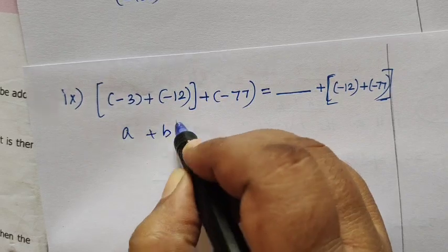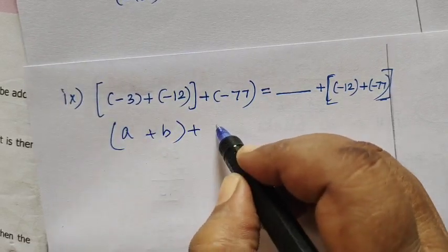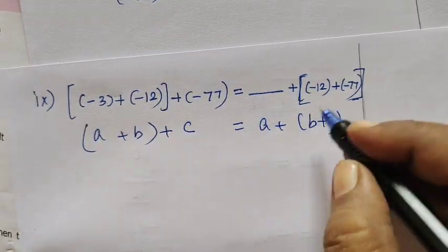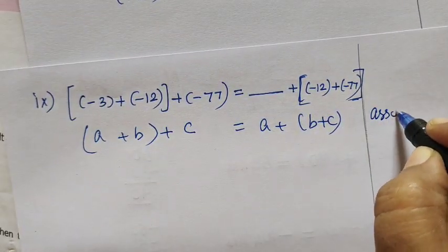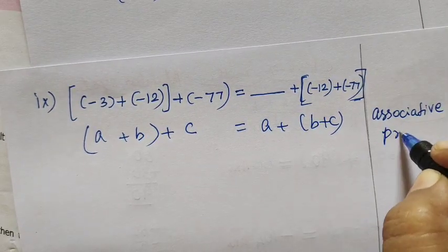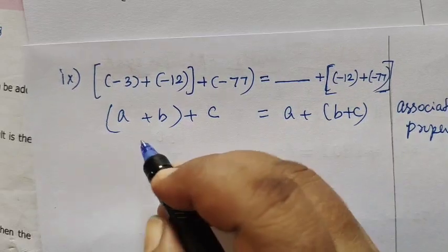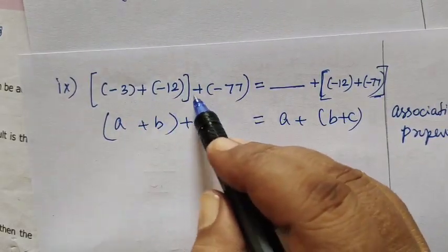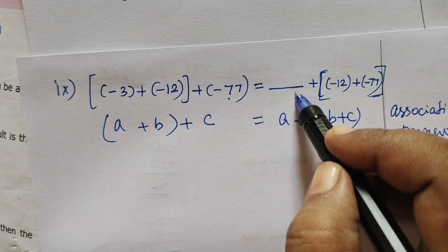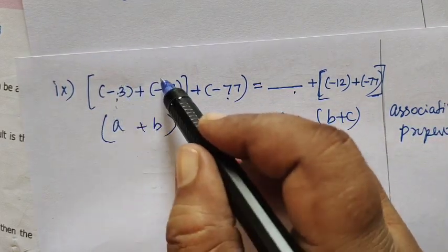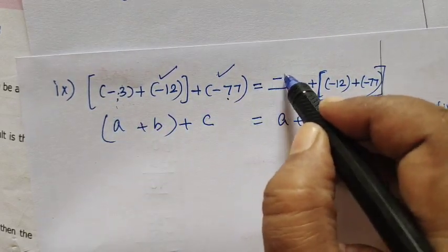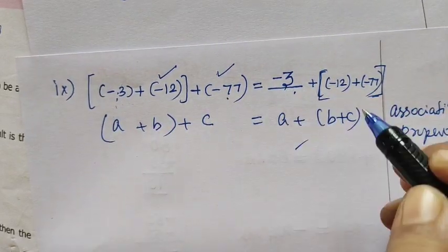A plus B associative property plus C equal to A plus B plus C. What property is associative property? This property is associative property. In this 3 number, 1 number is not given. What is that number? Minus 3 because second number, third number here. You write the first number. So this is minus 3. So this is the answer.